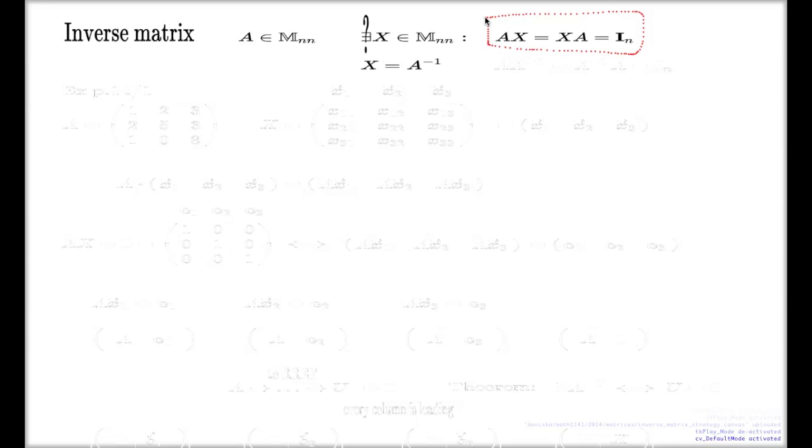Because matrix multiplication is non-commutative, we have to require the inverse to work on both sides — both left and right multiplication must give the identity.